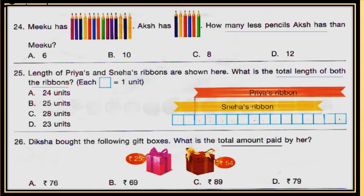Question number 24: Miku has pencils shown in the first figure and Aksha has pencils shown in the second figure. How many less pencils does Aksha have than Miku? Count how many pencils Miku has and how many Aksha has, then find how many less pencils Aksha has than Miku.